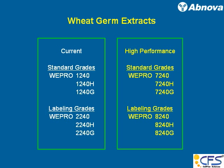We now have a high performance grade. High performance means high yield, and we call it WiPro 7240 — like a jumbo jet, that's the image, so you suddenly have a large yield. In the bilayer method, if you use the high performance grade, you can double the yield of your protein. So this is what we have now.